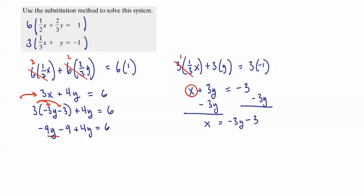Combining like terms, negative 9y plus 4y is negative 5y. Use your calculator if you need to. Negative 9 plus 4, that's negative 5 with the y's. Then we have minus 9 equals 6. We're going to add 9 to both sides. And we end up with negative 5y is equal to 15. Divide by negative 5. And finally, y is equal to negative 3.